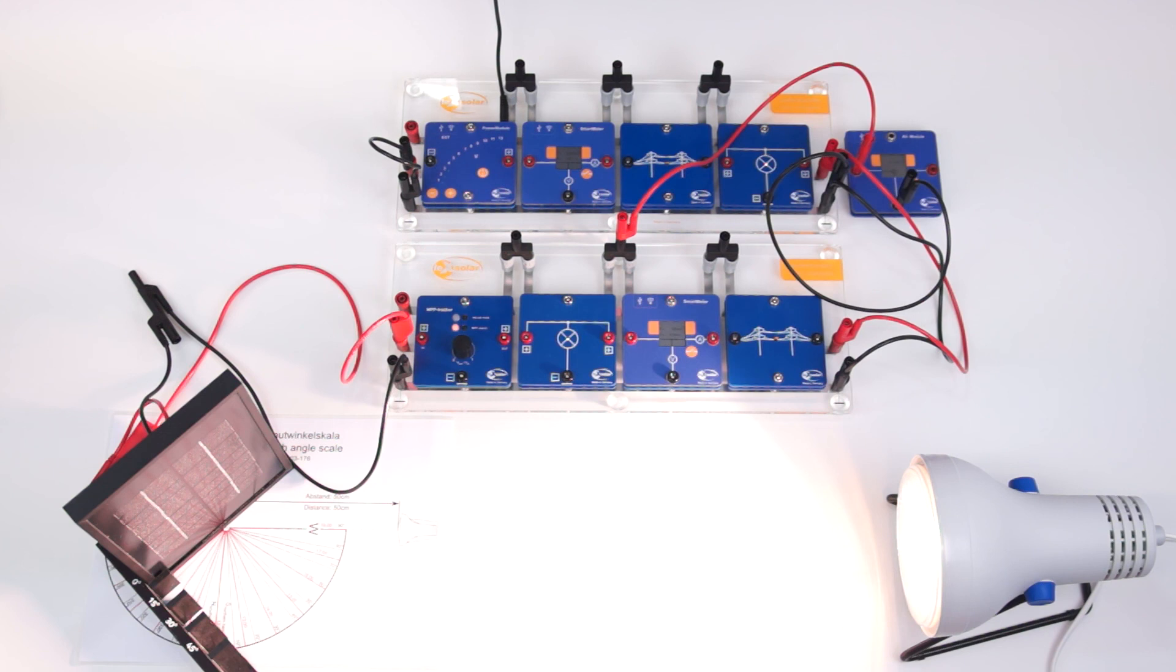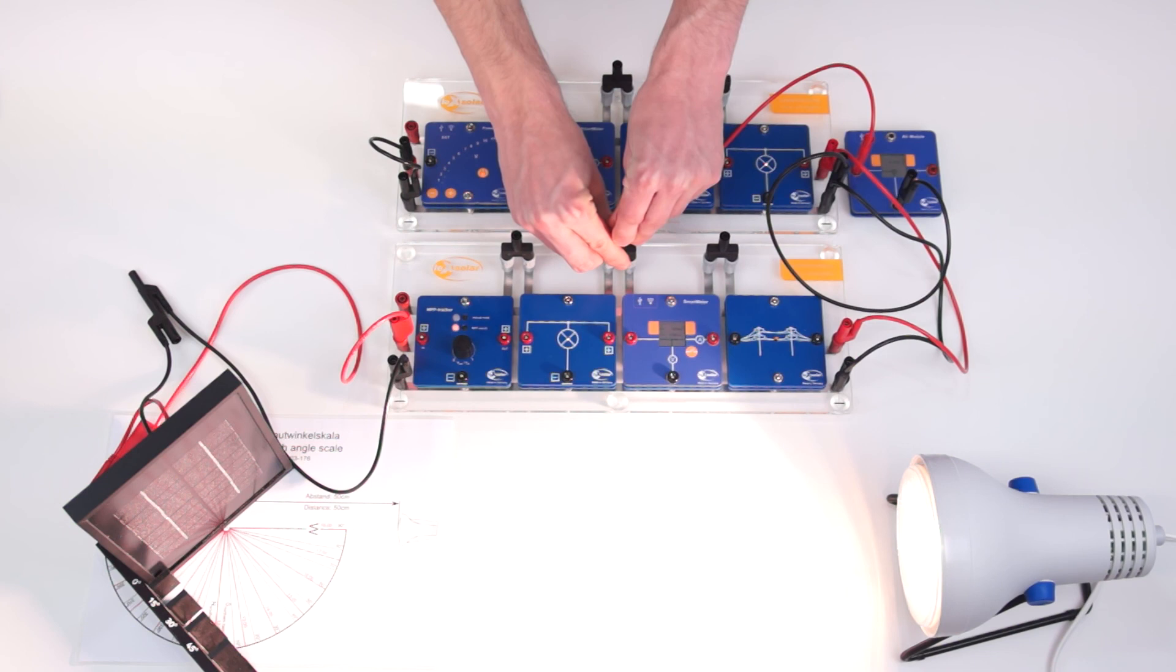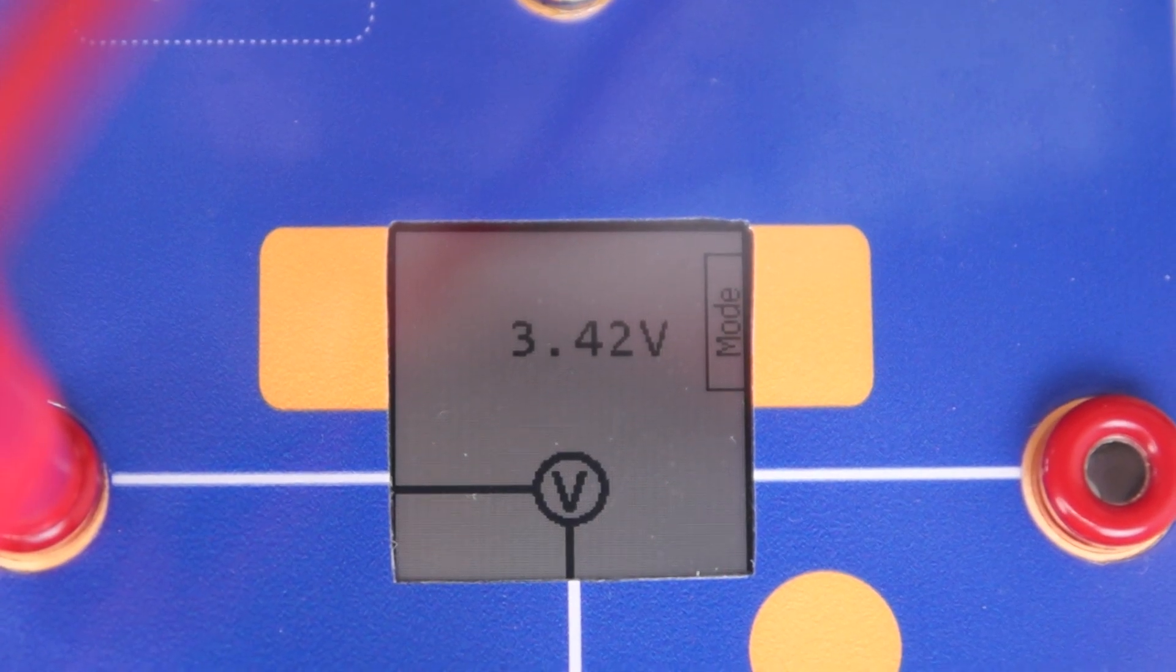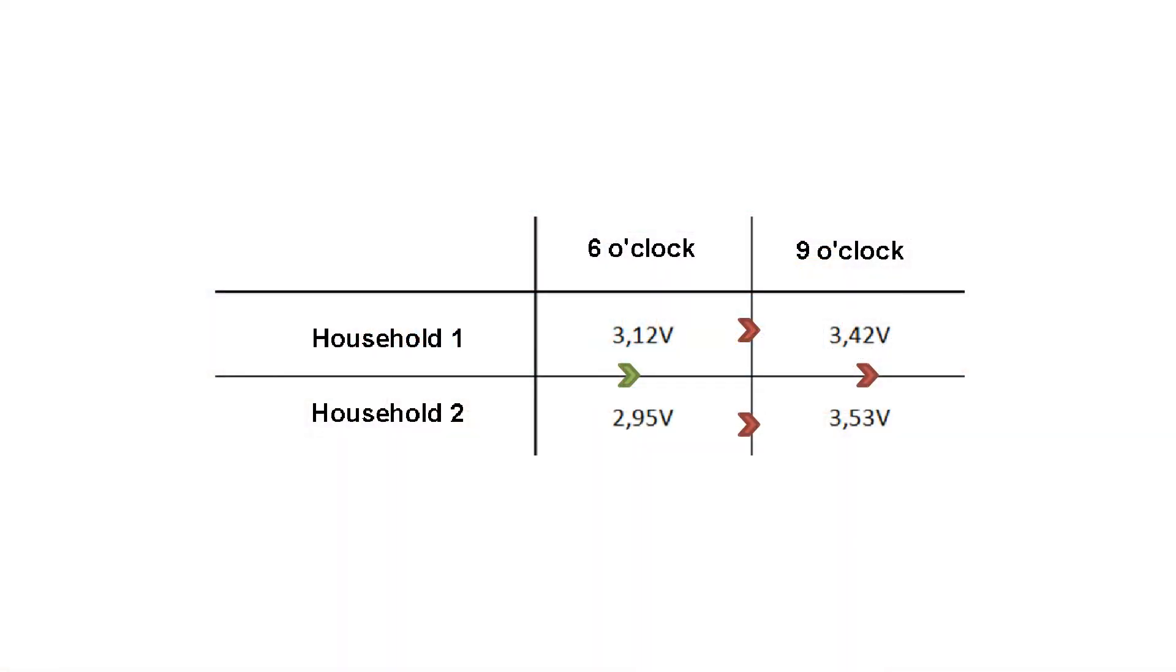We now measure again the voltage of both households. The voltage at the second household now stands at 3.53 volts. The following measurement of the voltage at the first household now amounts to 3.42 volts.